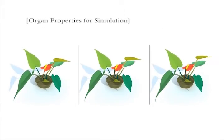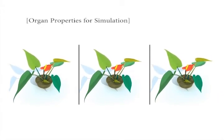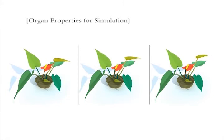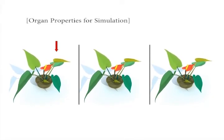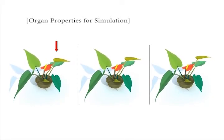Continuing with the previous application, extracted organ properties can be further fed as simulation parameters. Here we show effects of stiffness parameter. In the left simulation, the stiffness value is set to be constant. In the middle simulation, stiffness is set to be inversely proportional to the stem age, as analyzed by our algorithm.